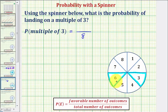So notice how there are only two favorable outcomes, three and six, and therefore the probability of landing on a multiple of three is two-eighths. And two-eighths does simplify. We have a common factor of two. Two-eighths simplifies to one-fourth.